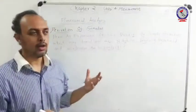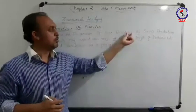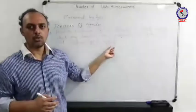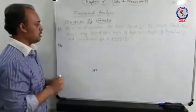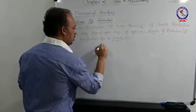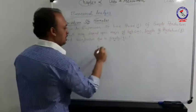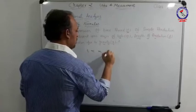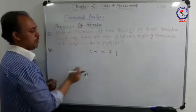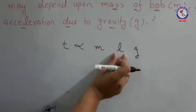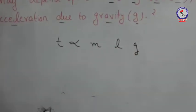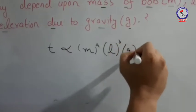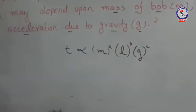From this question, we understand that we have to derive a relation for time period in terms of mass, length, and acceleration due to gravity. We start by writing the governing relation: T is proportional to M to the power A, L to the power B, and G to the power C, where A, B, and C represent the unknown exponents.